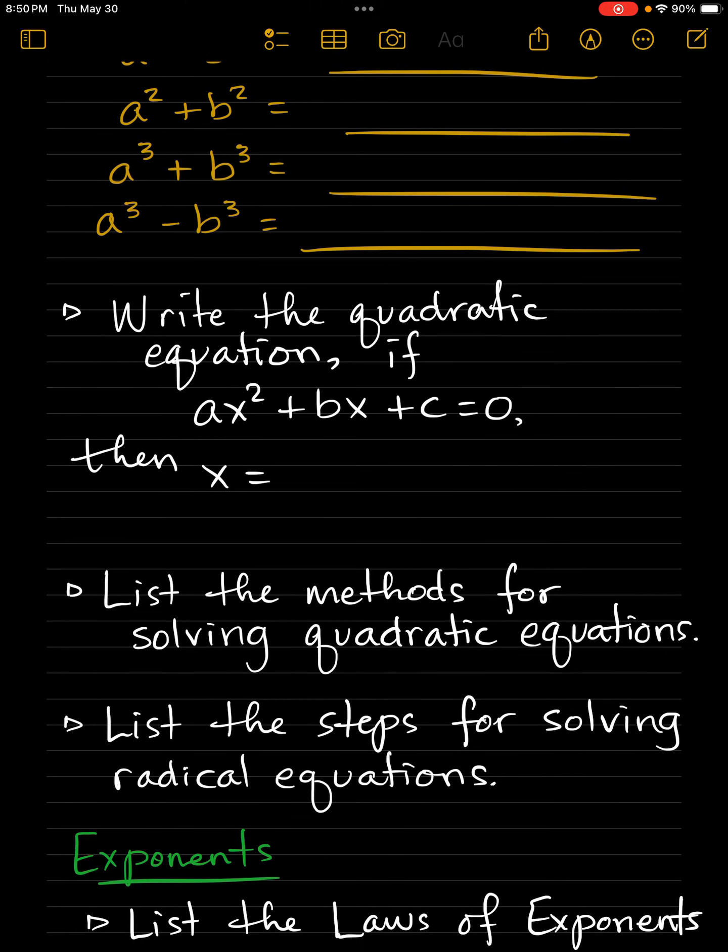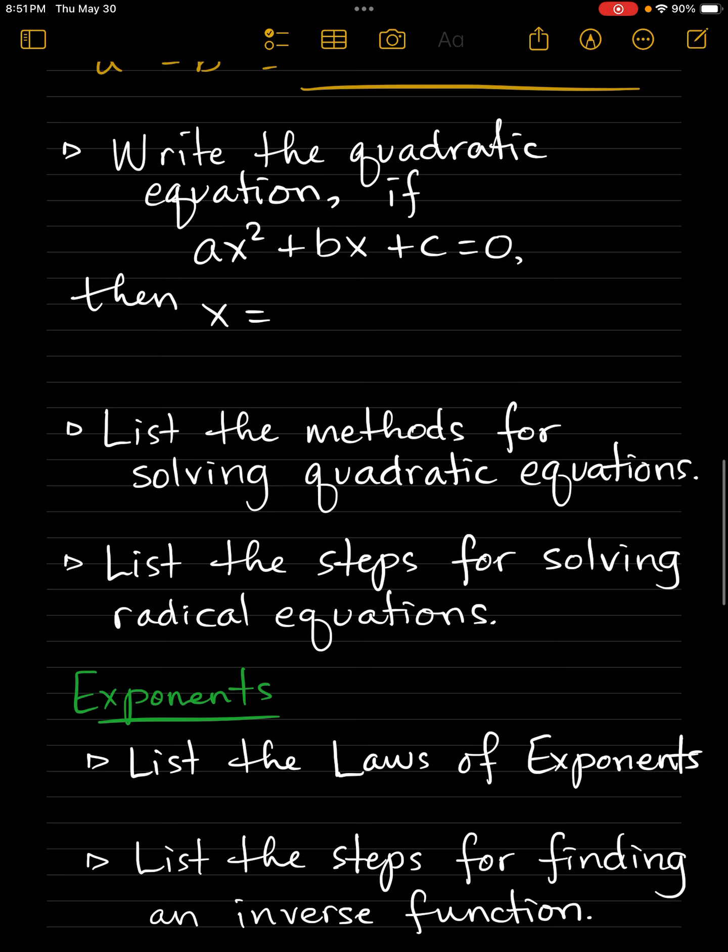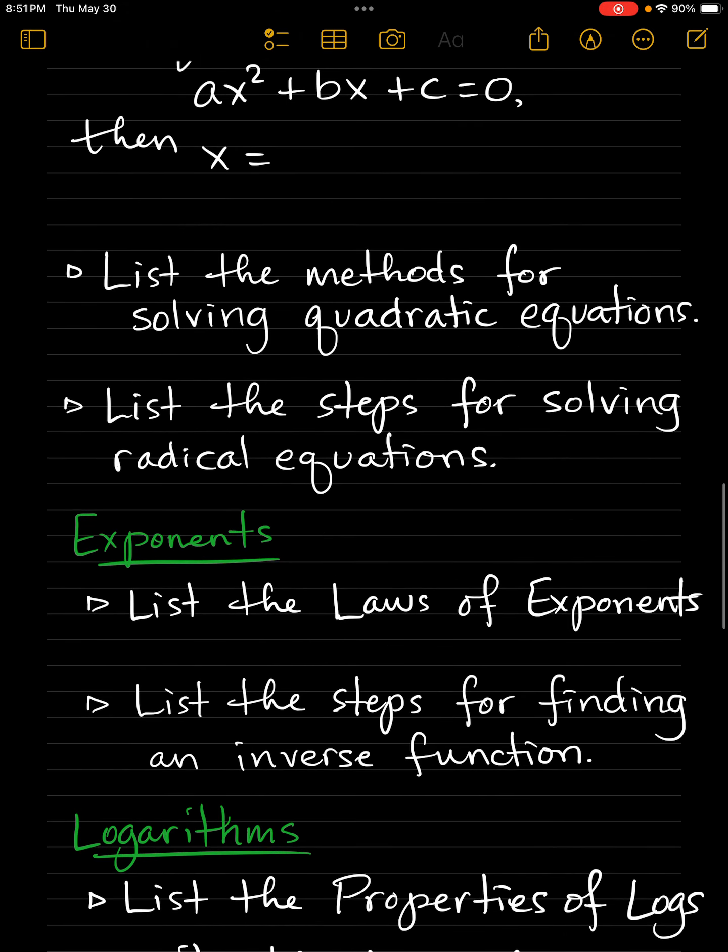Now, write the quadratic equation. If ax squared plus bx plus c equals zero, x equals—you can do the rest. Now list the methods for solving quadratic equations. I'll give you a hint. The first one is factor and use the zero product property. Find your notes and see what else.